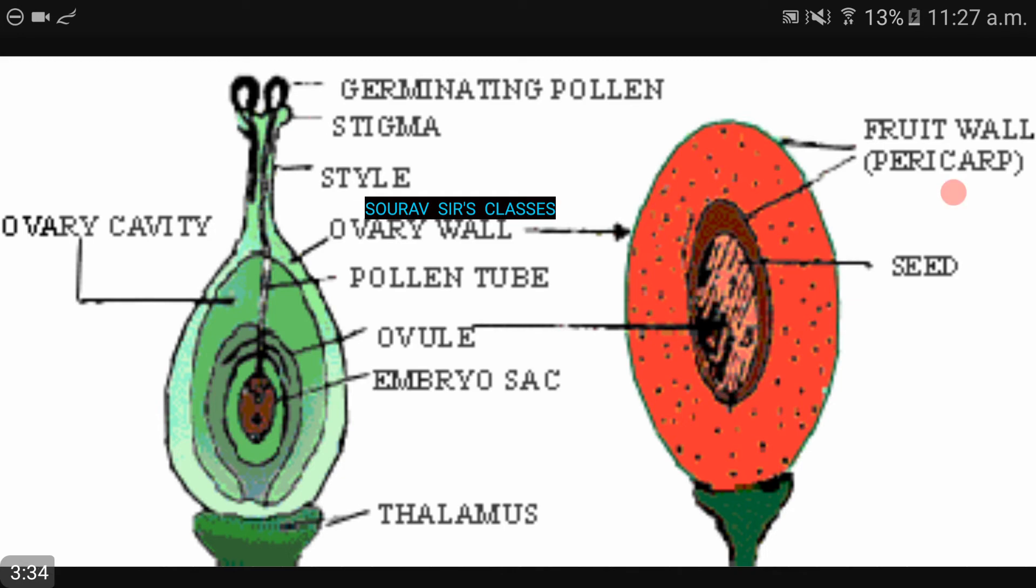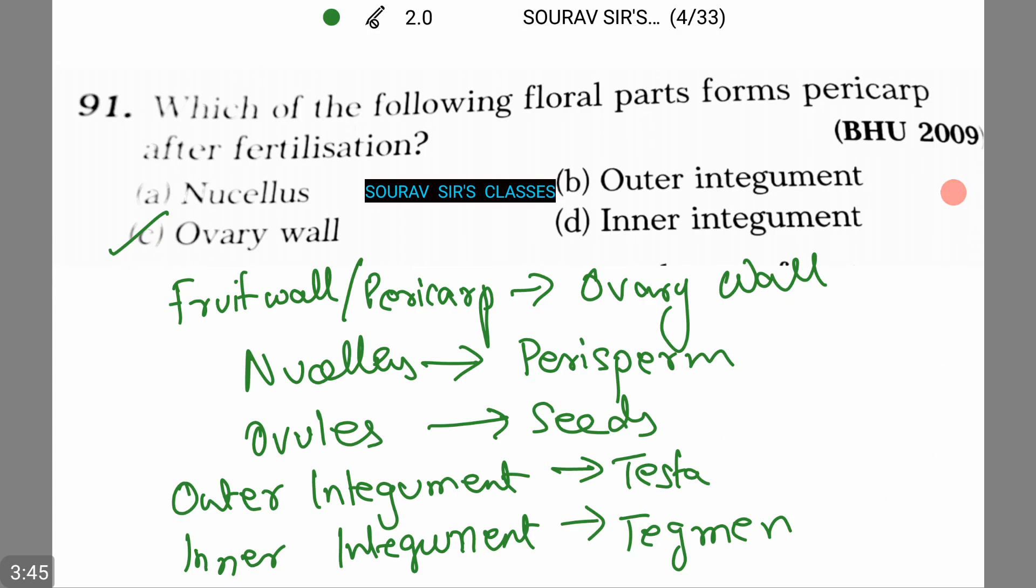Some other post-fertilization changes also occur in the nucellus. Wait, I'll write each and every process down so that you can understand what I am saying. These are the post-fertilization changes that occur: nucellus develops into perisperm, ovules into seeds, outer and inner integument forms the testa and the tegmen.